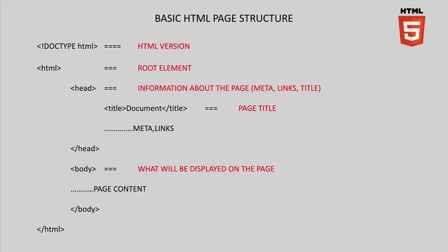At the very top, we have a DOCTYPE declaration that tells the browser what HTML version the page is written in. The DOCTYPE corresponds to the latest version of HTML, which is HTML5. Next, we have the HTML root element that will wrap all our code, and it will always contain one head element and one body element — with everything nested inside the HTML element.